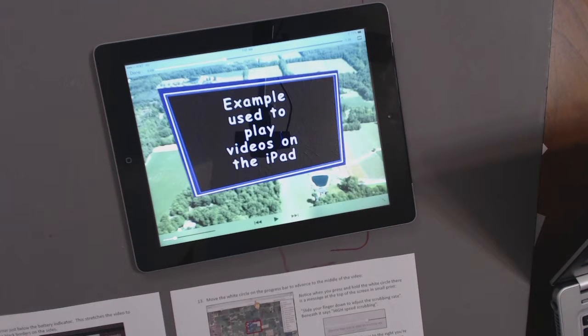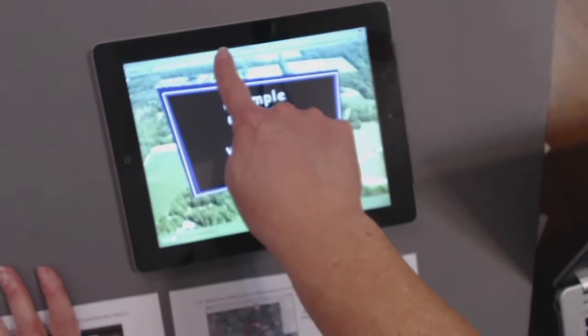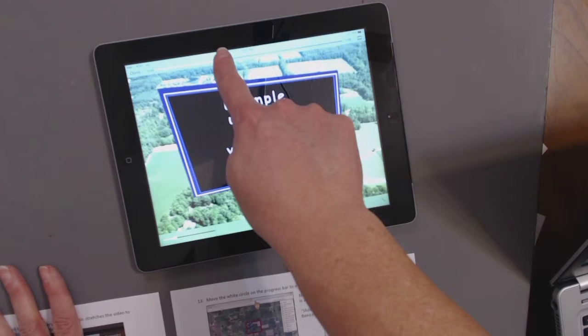Move the white circle on the sliding bar to rewind or fast forward the video. It took me a little while to figure this out. But notice when you press and hold the circle there is a message at the top of the screen in small print that says slide your finger down to adjust the scrubbing rate.